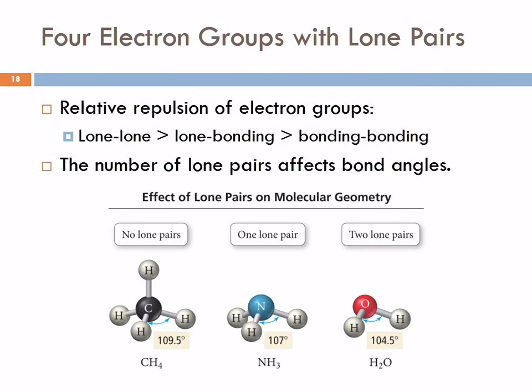So here's the relative repulsion of electron groups. Lone pair, lone pair is the most repulsion. A lone pair next to a bonding pair is next. And bonding, bonding pair is less. And so here with the methane, these are all bonding pairs, no lone pairs, and so we have the ideal geometry of 109.5. One lone pair sticking up here squeezes these together, 107. The two lone pairs - that lone pair, lone pair repulsion is even larger, and that forces the bond angle to be smaller.